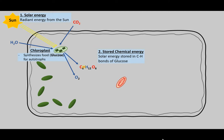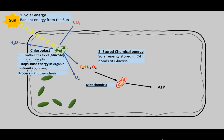That stored energy is not directly usable by the plant. Photosynthesis, occurring in the chloroplast, traps solar energy in organic nutrients like glucose. Since that energy can't be used directly, glucose has to go to the mitochondria and be transformed into ATP. Using just glucose gives a very small amount of ATP. ATP — adenosine triphosphate — is usable energy that can carry out all life functions. Ribosomes and other structures can't use glucose but can use ATP to carry out life functions, also called metabolism.